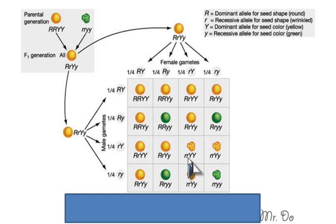This one is a wrinkled yellow, and this one is a wrinkled yellow, and this one is the same. And this is the only one that is a wrinkled green. Then after you finish it, you have to count the genotype total and the phenotype total.